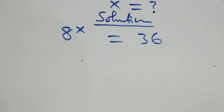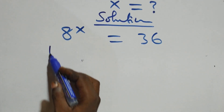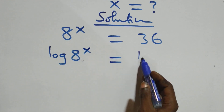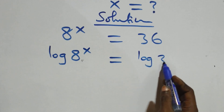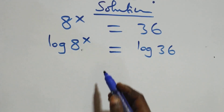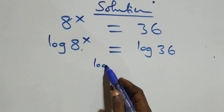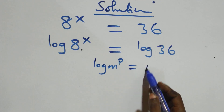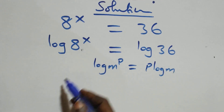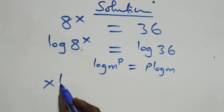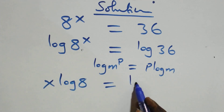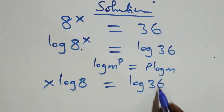Here we take the log on both sides, so we have log 8 raised to power x equals to log 36. The next step, we apply the power rule of log: when we have log m raised to power p, it is the same thing as p log m. So what we have becomes x log 8 equals to log 36.